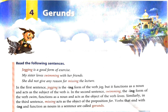With the help of these sentences, we will learn what gerunds are. Jogging is a good form of exercise. My sister loves swimming with her friends. She did not give any reason for missing the lecture. In the first sentence, jogging is the -ing form of the verb jog, but it functions as a noun and acts as the subject of the verb.